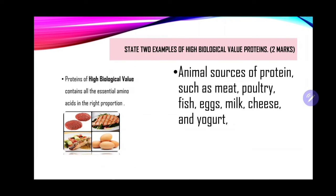The next part asks you to state two examples of high biological value proteins. Proteins of high biological value contain all the essential amino acids in their right proportions, so these come from animal sources. Examples include meat, poultry, fish, eggs, milk, cheese, and yogurt. Note that gelatin, which is also of animal source, is an exception because it lacks one or more essential amino acids, so items like pig trotters or cow foot would not be listed here.